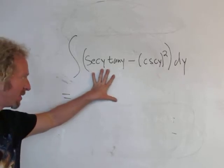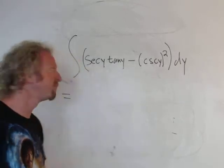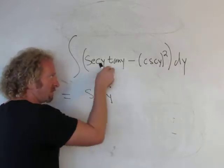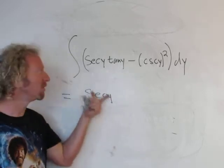So when you're doing this piece, you ask yourself what's a function whose derivative is secant tangent? Well, secant. So the secant of y, that's going to come from this piece because if you take the derivative of secant, you get secant tangent.